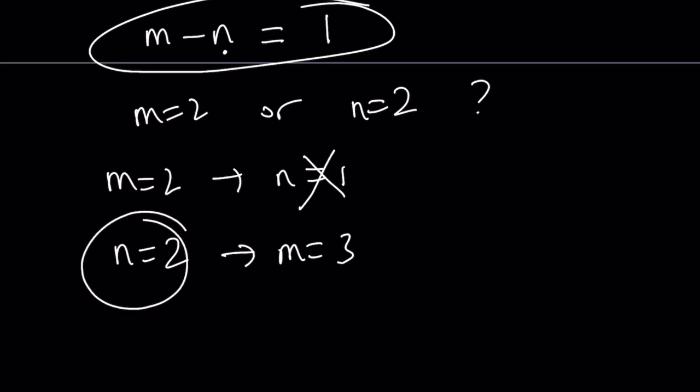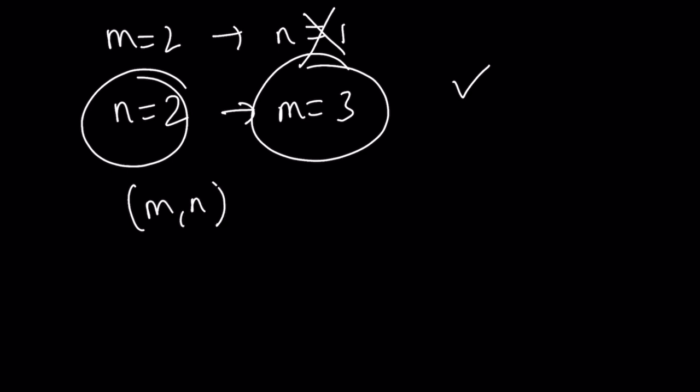Yay! Case closed. We're done. So the values we're looking for, m, n, are going to be 3, 2.